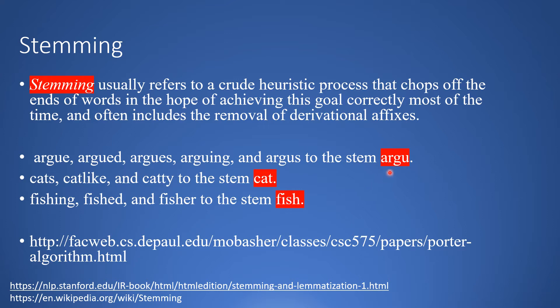What can happen is that at times during the stemming process, after removing the derivational affixes, you might get a word which is not present in the dictionary or not present in the language. One of the most popular stemming algorithms is the Porter Stemmer. Porter Stemmer has a set of rules which it applies on a word to remove the affixes.